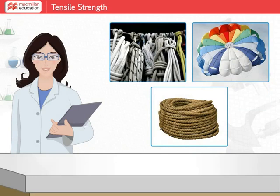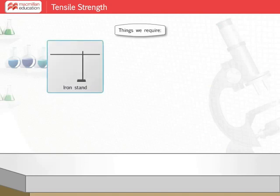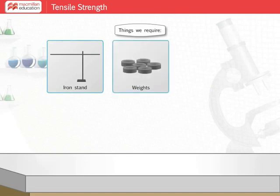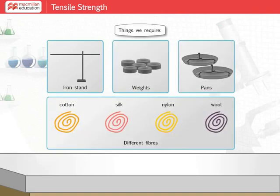Through this experiment we are going to compare one such property of fibers: their tensile strength. The materials you require to perform this experiment are an iron stand, different weights, pans, and threads of cotton, silk, nylon, and wool of equal thickness and length.